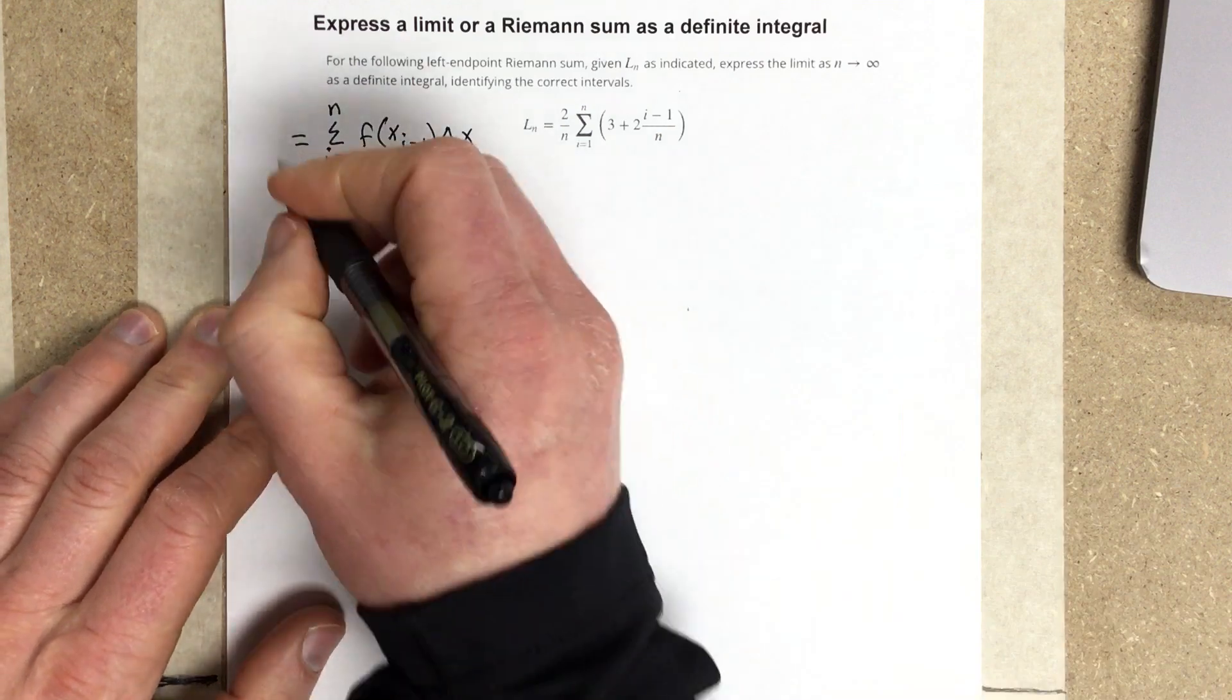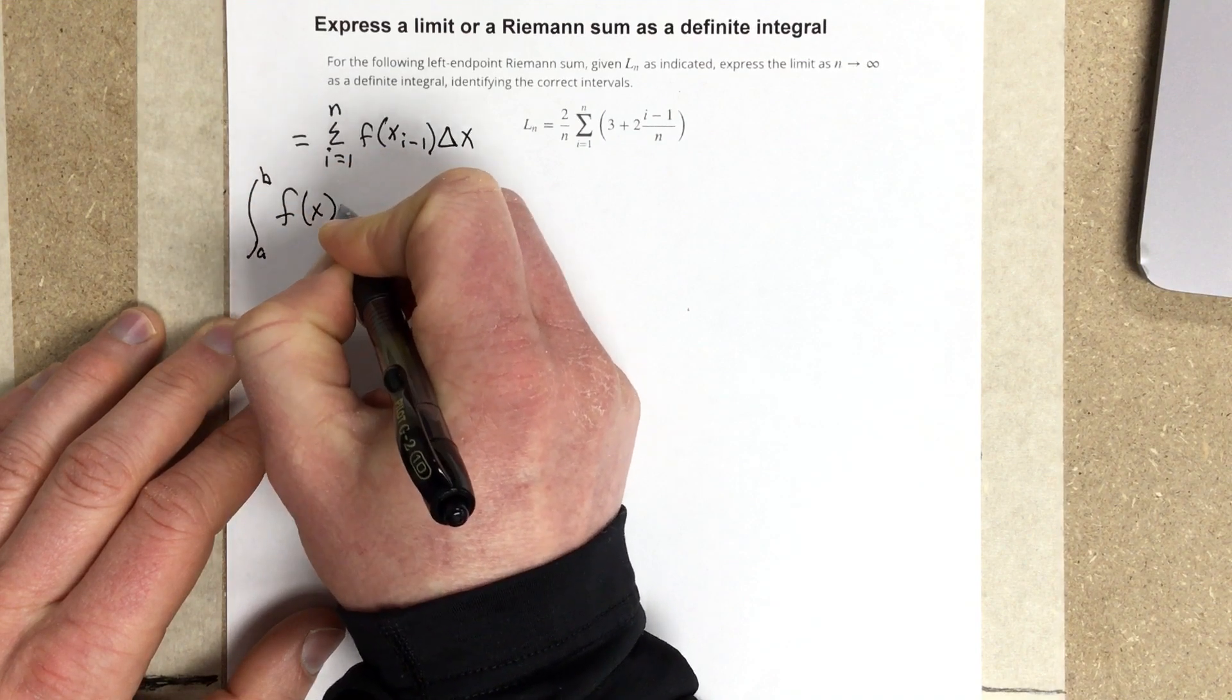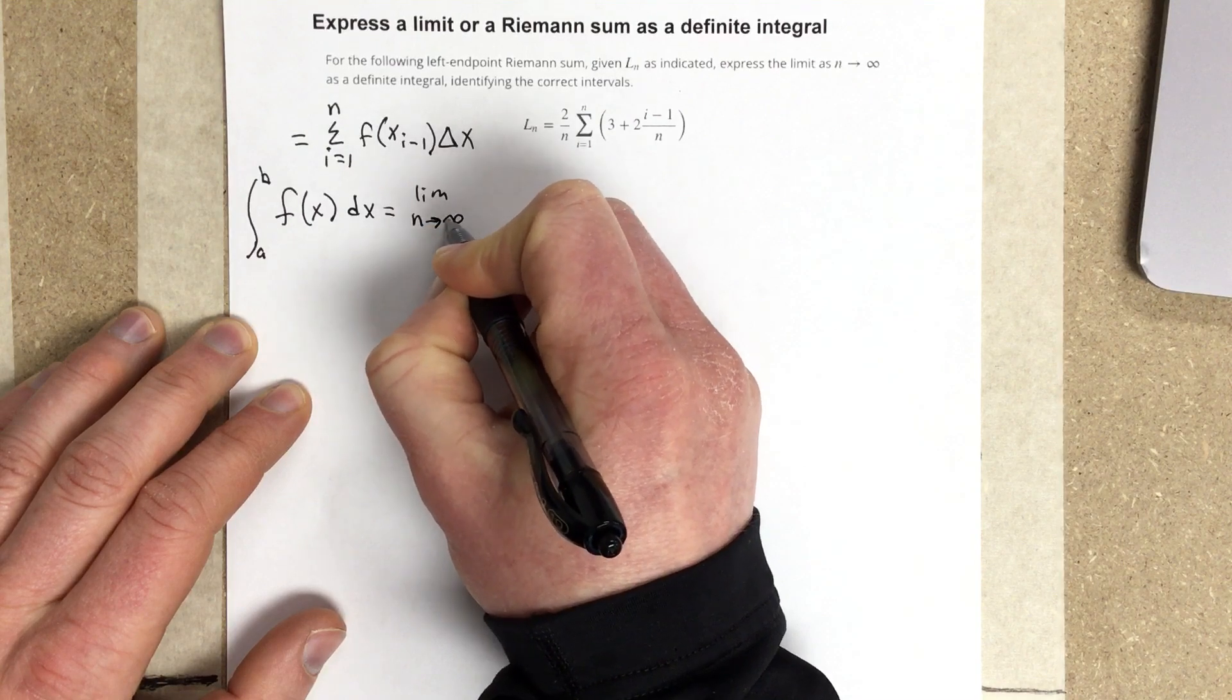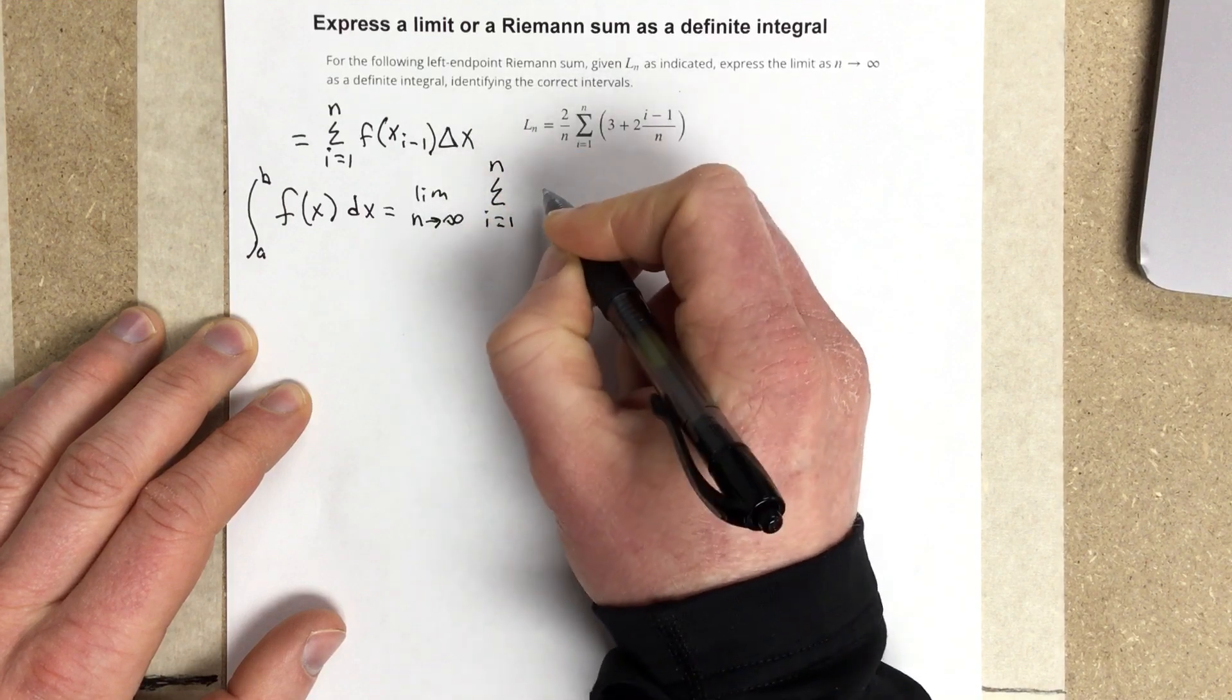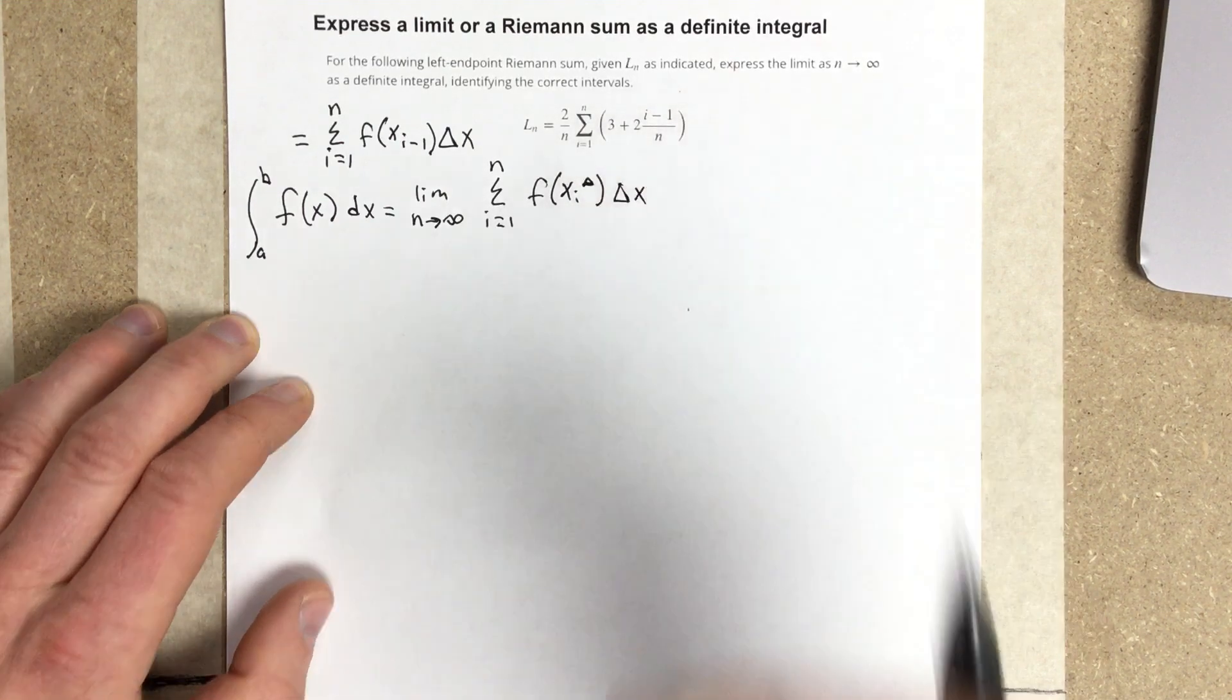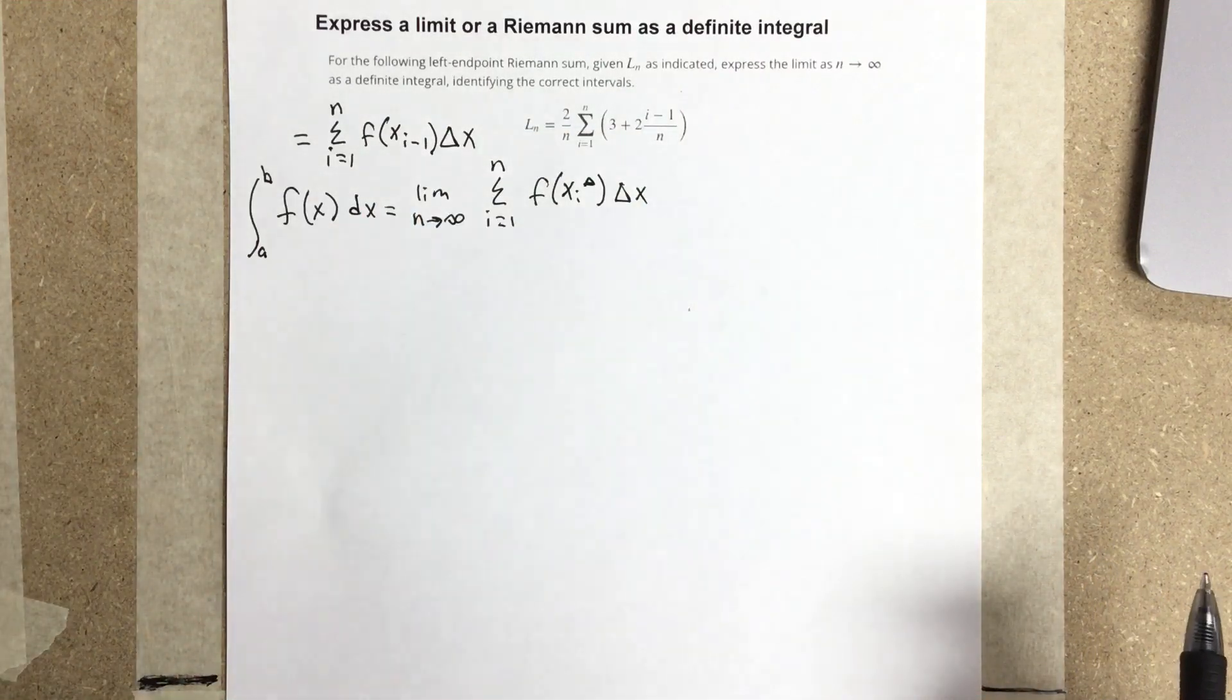We also need to notice that the integral from a to b of f(x)dx is equal to the limit as n approaches infinity for the summation i equals 1 to n of f(x_i*)Δx, or change of x. Now, we're going to use this piece of information right here the most, where we have this left endpoint Riemann sum.